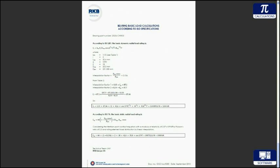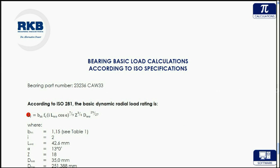By definition, the basic dynamic load rating, CR, is defined as a load that a bearing can carry for 1 million inner-race revolutions with a 90% probability of survival. This is the mathematical equation to calculate this rating for a single radial roller bearing according to ISO 281.